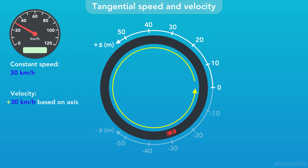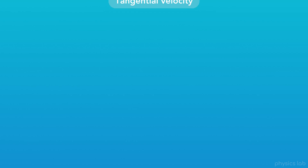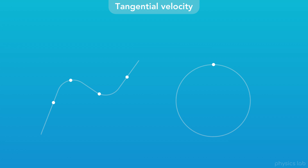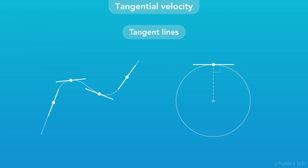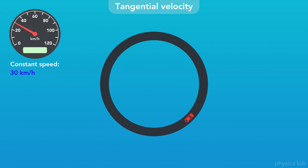Why do we call this the tangential velocity? It comes from geometry. For any point on a curved line or a circle, a tangent line is a line that passes through that point and matches the slope or curvature of the line at that point. For a point on a circle, the tangent line will only touch the circle at that one point, and it will be perpendicular to the radius line. As this point moves around the circle, the tangent line rotates and always remains tangent to the circle. So as this car drives around in a circle, the direction the car is pointing always falls onto a line that is tangent to the circular path — so we call this the tangential velocity.